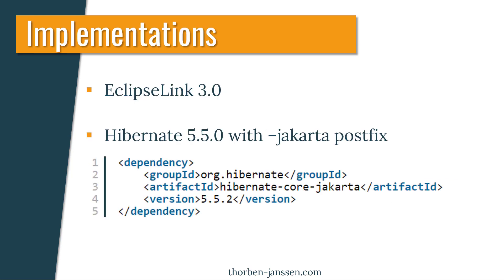The two most popular implementations of the JPA specification support version 3.0. If you want to use EclipseLink, you need to use at least version 3.0. Hibernate started to support JPA 3.0 with version 5.5. All Hibernate artifacts that support the new JPA 3.0 APIs have the suffix Jakarta in their name. If you still want to use the old APIs, you can stick to the old artifact names.